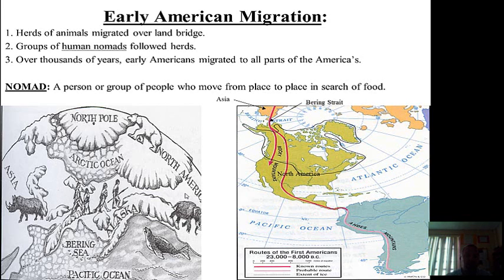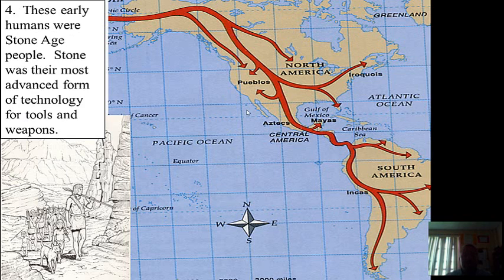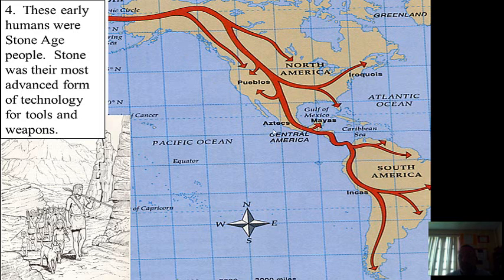Now, what did they do when they came to the Americas? If you look at the large map here, the red lines indicate the travel routes that these early people took. Over time, these early humans spread out throughout North America. They even traveled further into Central America and further into South America. Now, this process did not happen overnight — it wasn't like one year they arrive in North America and the next year they're all the way down in South America. This process took thousands of years to happen.